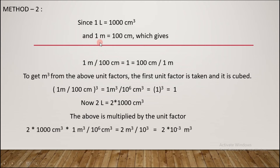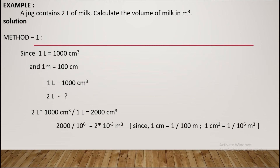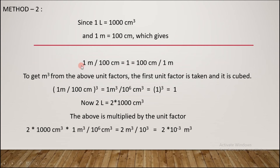We know 1 liter = 1000 cm³, and 1 m = 100 cm. We create unit factors: 1 m / 100 cm = 1, or equivalently 100 cm / 1 m = 1. Based on the question, we choose the appropriate unit factor — we choose 1 m / 100 cm so the unit factor equals 1.